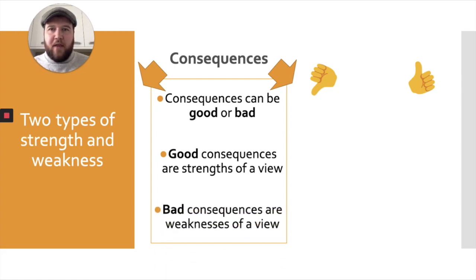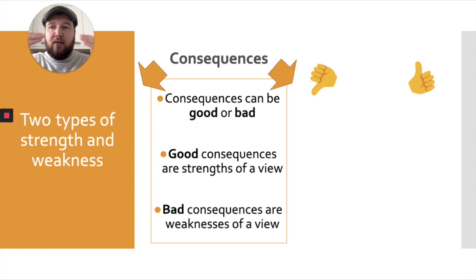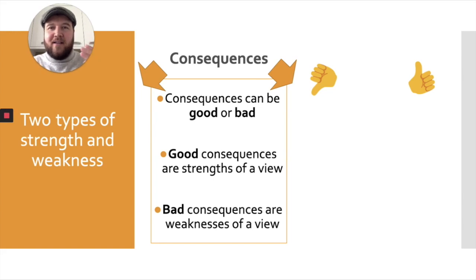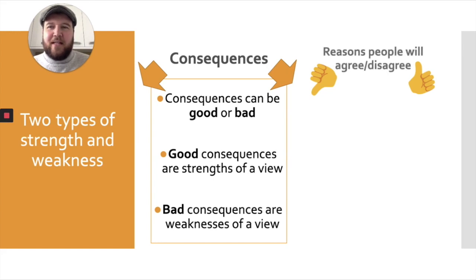So have a think about Amnesty International's view — they want to ban the death penalty. What are some good consequences of banning the death penalty? Good things that will happen if we ban it. What are some bad consequences? Some bad things that will happen when we ban it. These are good things about the argument and bad things about the argument — strengths and weaknesses. We'll look at some examples later to help you understand more.